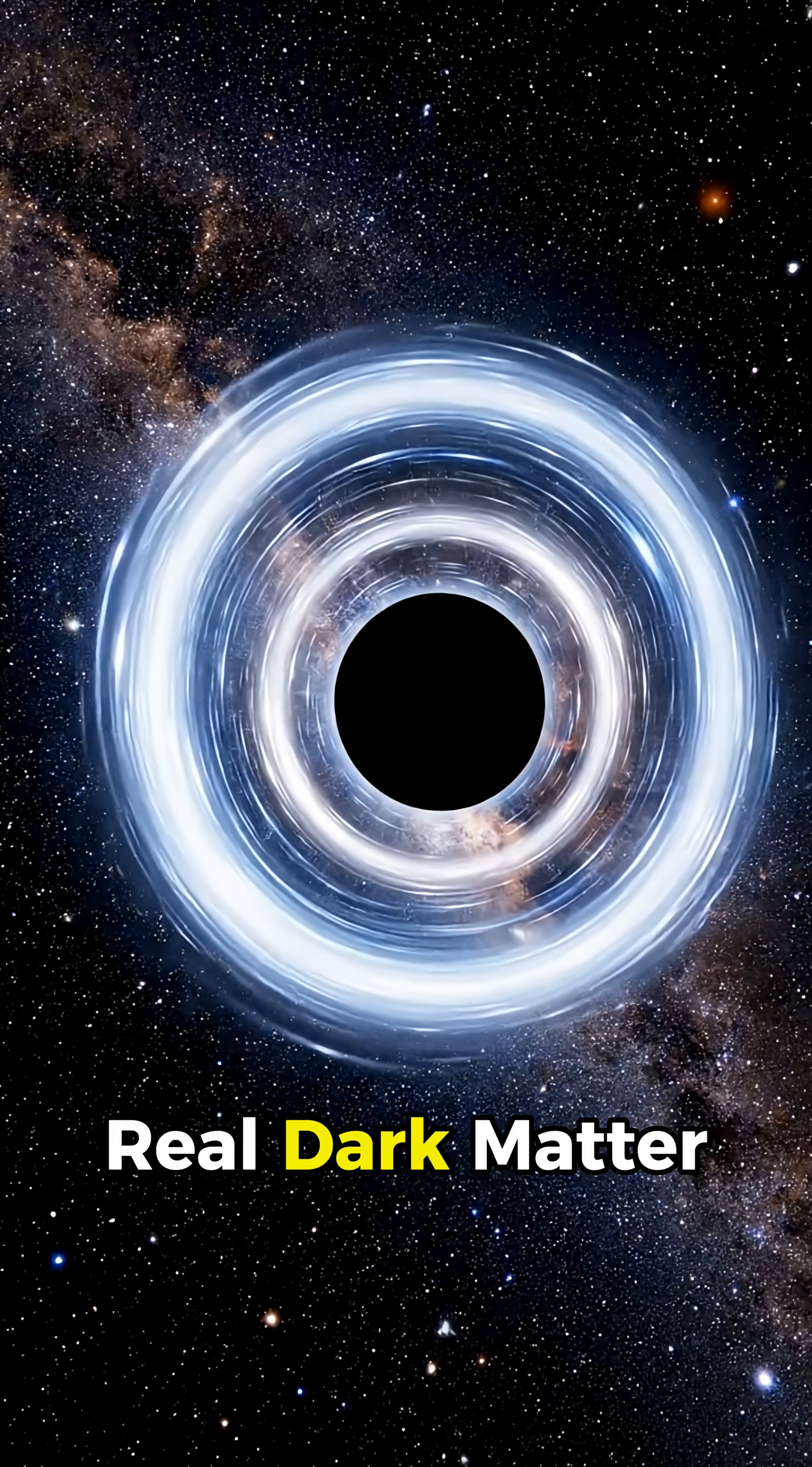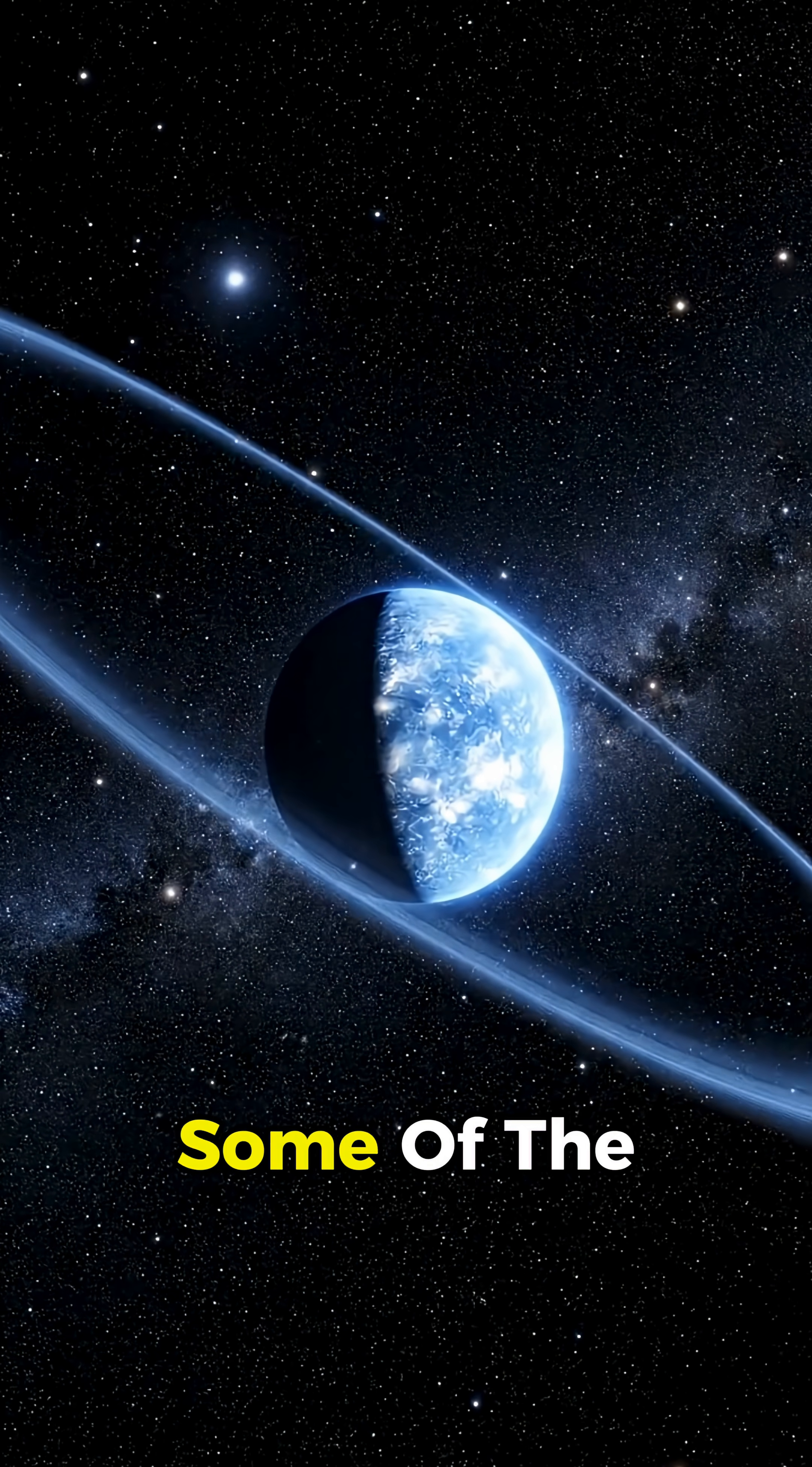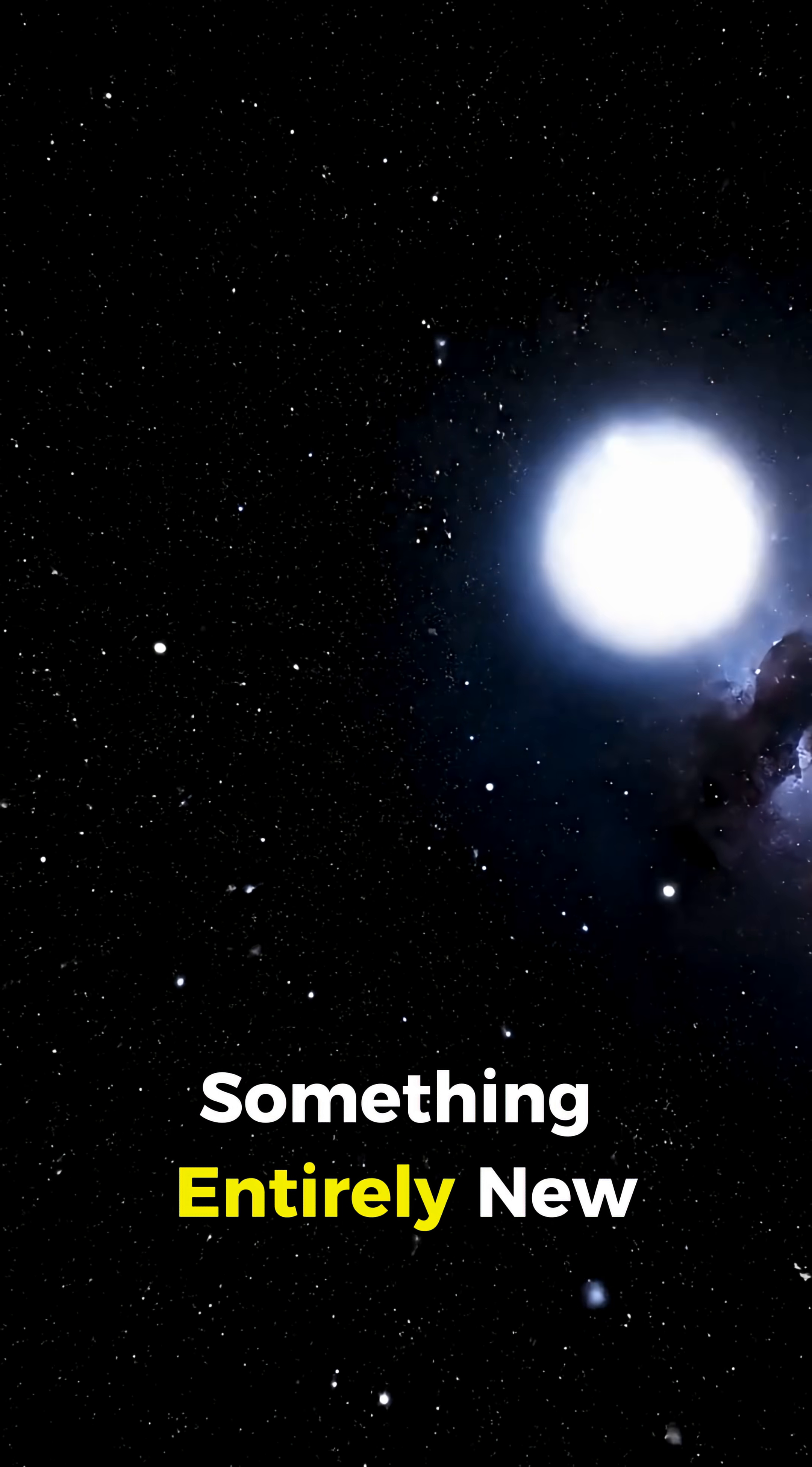If this is real, dark matter stars could be millions of times larger than the sun and may have existed in the earliest moments after the Big Bang. Some of the objects we've already observed might have been misidentified—not galaxies, but something entirely new.